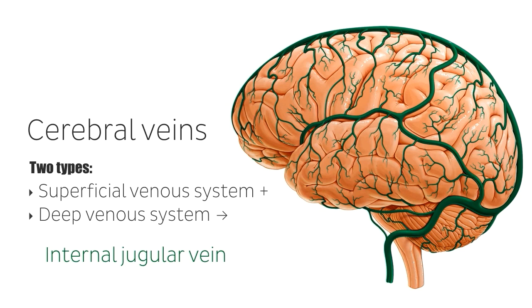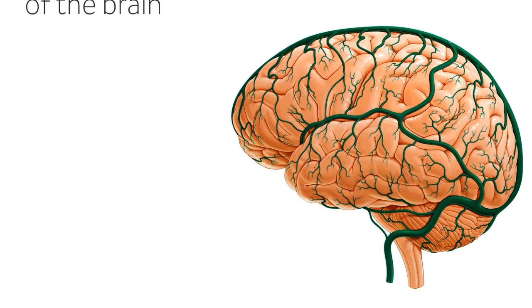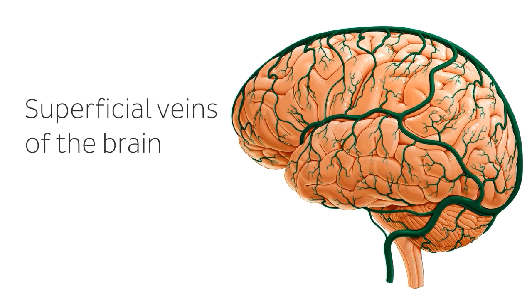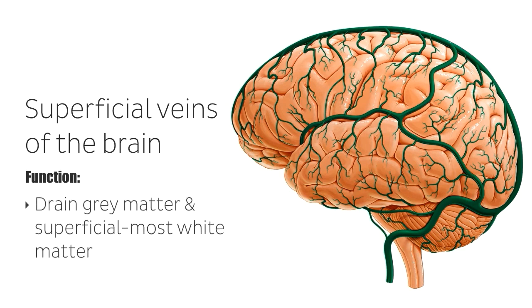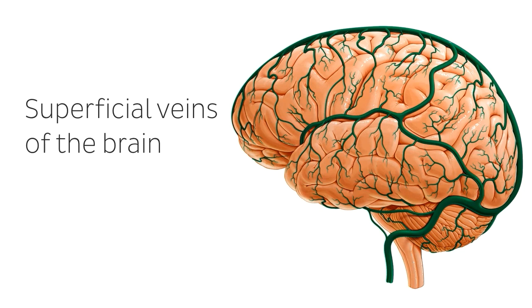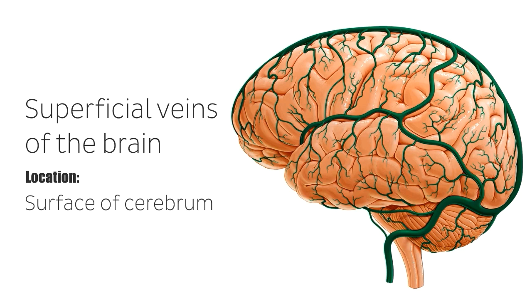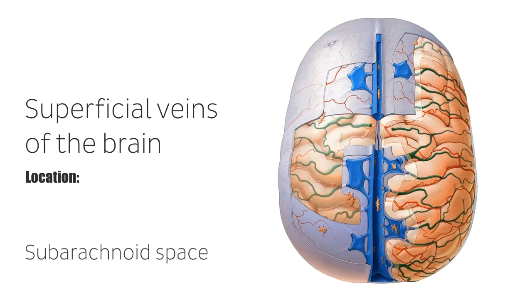Let's have a chat now about the function and location of the superficial veins of the brain. As we mentioned, the main role of the superficial veins of the brain is to drain blood from the grey matter and superficial-most white matter of the cerebral cortex. As you can probably guess from the name, the superficial veins of the brain are the veins found on the surface of the cerebrum. More specifically, they are found in the subarachnoid space, that is, between the arachnoid mater and the pia mater.